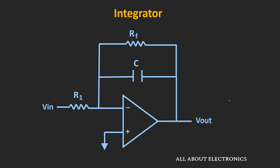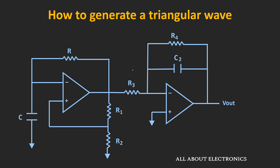The integrator circuit is designed using an op-amp. The input is given at the inverting node of the op-amp, and capacitor C is connected in the feedback path. Because of R1 and C, the input signal gets integrated. For stability, a feedback resistance Rf is also connected in the feedback path. Combining this astable multivibrator with the integrator circuit makes it possible to generate the triangular wave.